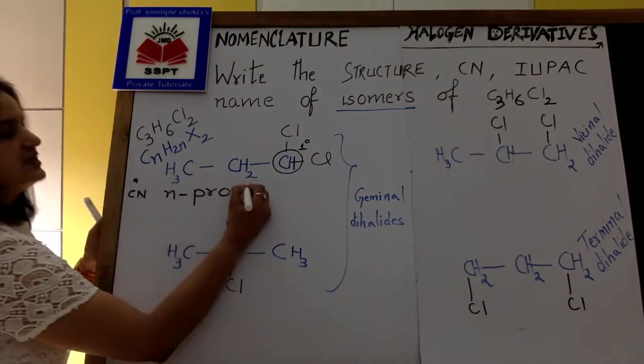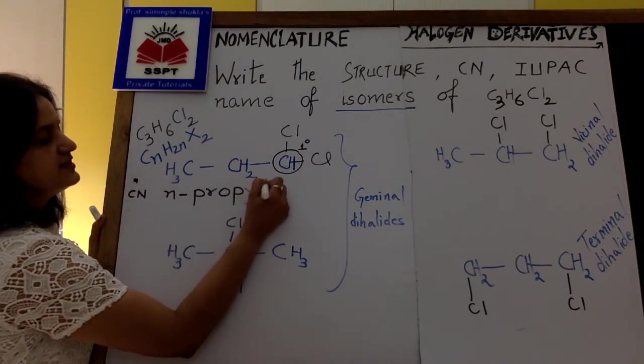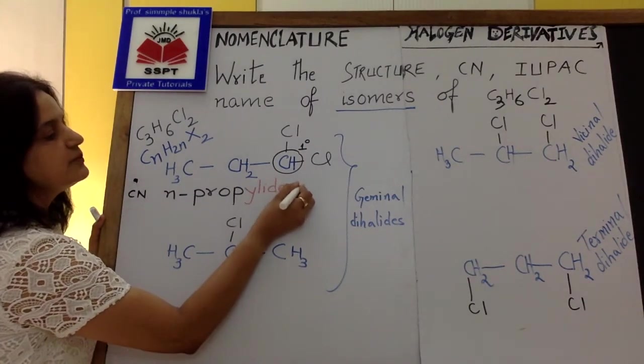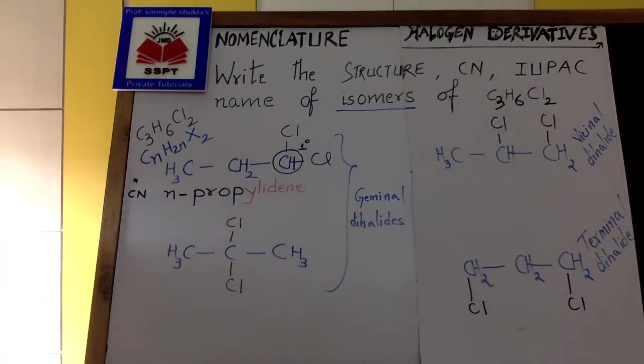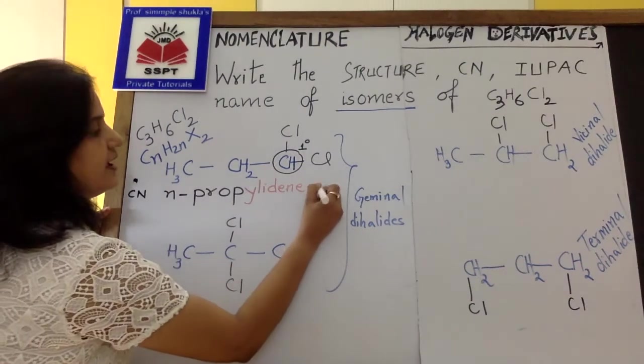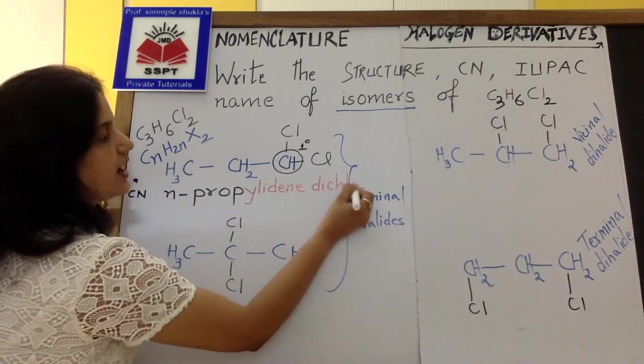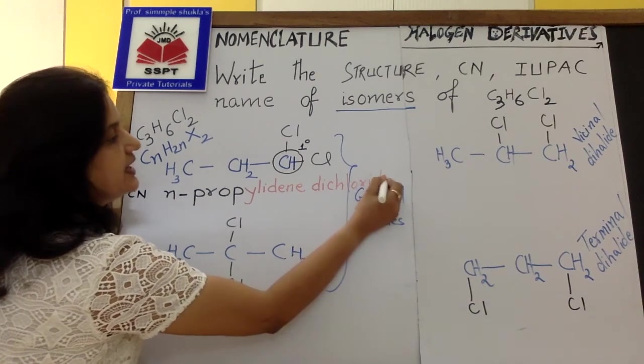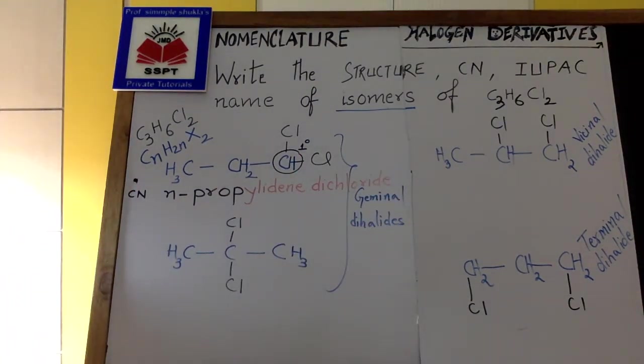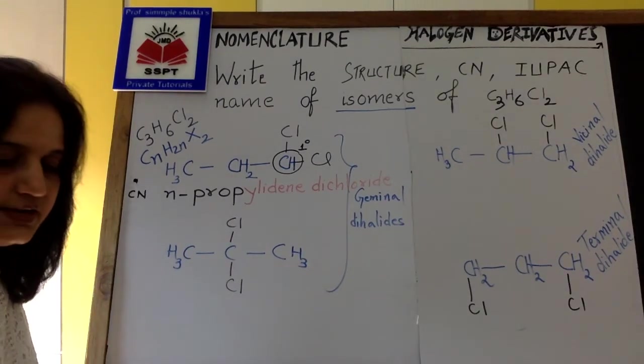Two halogens are on the same carbon. So the suffix is illidine. Propylidine dichloride. Propylidine dichloride. Correct? So this name is propylidine dichloride.